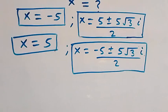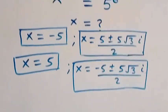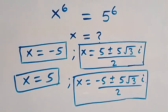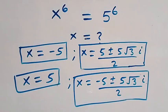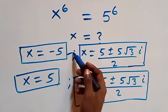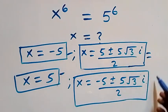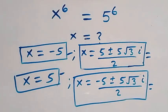All together, we have 6 solutions to this problem: 2 real solutions (x equals 5 and x equals minus 5), and 4 complex solutions — 2 from the first case and 2 from the second case, making 6 total.